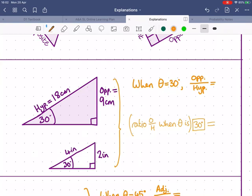So we're given a right angle triangle with a 30 degree angle. We are told here that the opposite is 9 centimeters and the hypotenuse is 18 centimeters. Then we have another triangle, also right angle triangle with a 30 degree angle, and that has an opposite of 2 inches and a hypotenuse of 4 inches. Now, we might notice something already, but if we were to divide opposite by hypotenuse, both of these would simplify to one half.